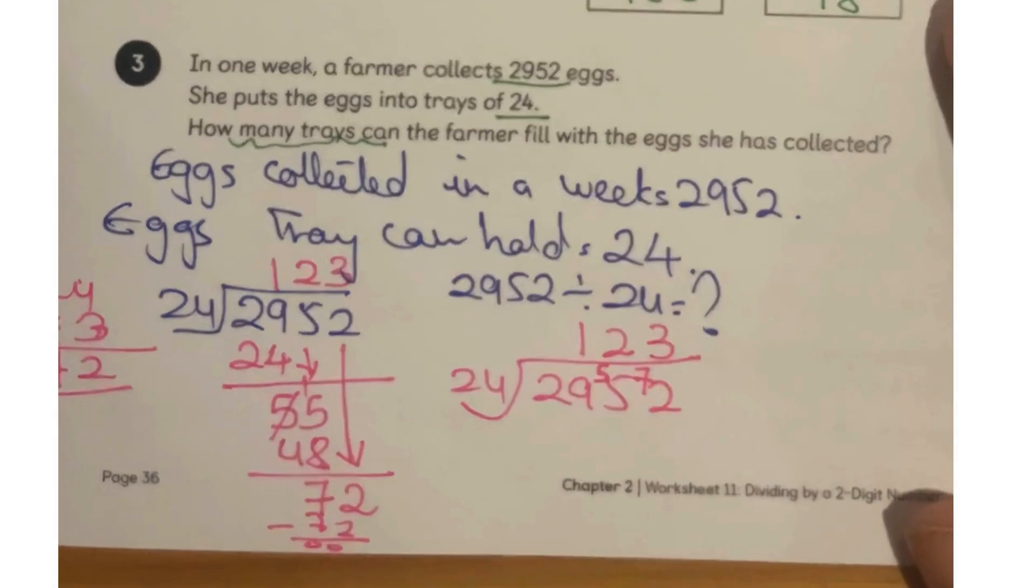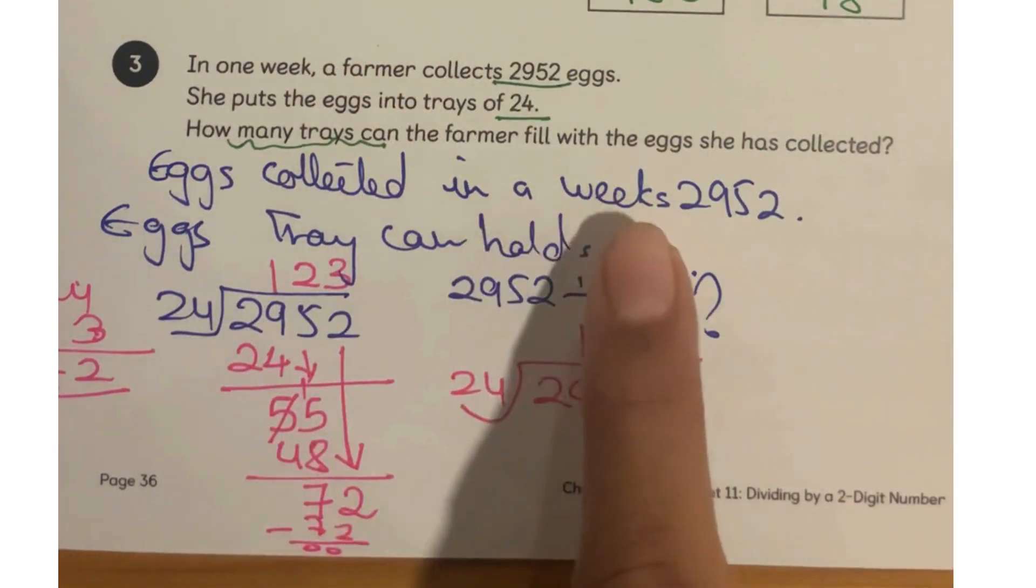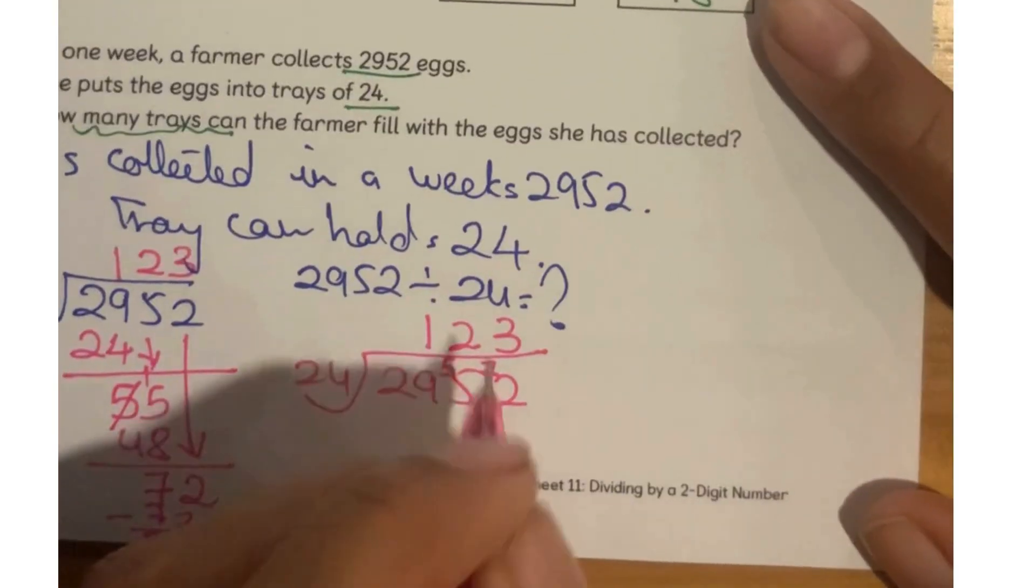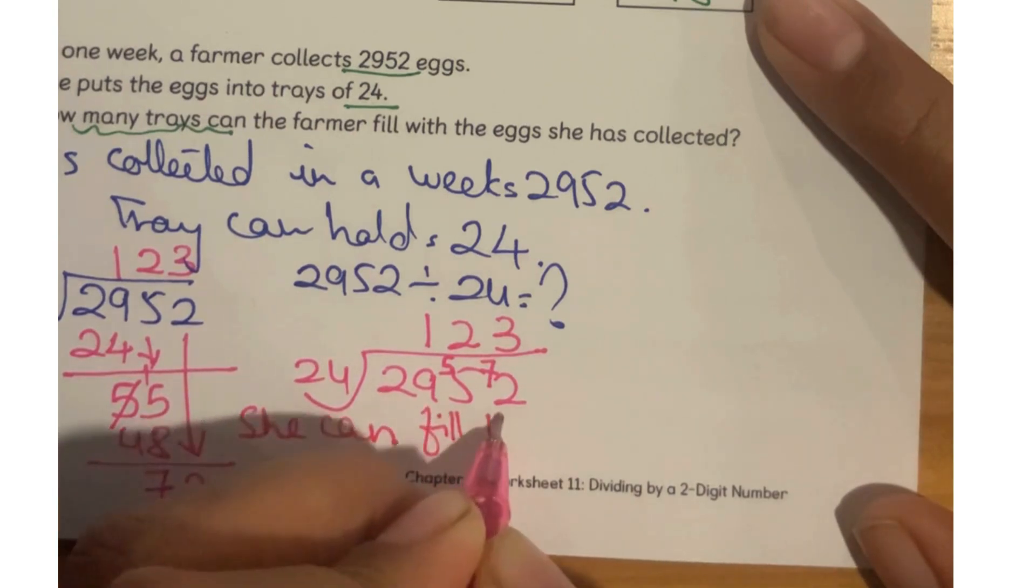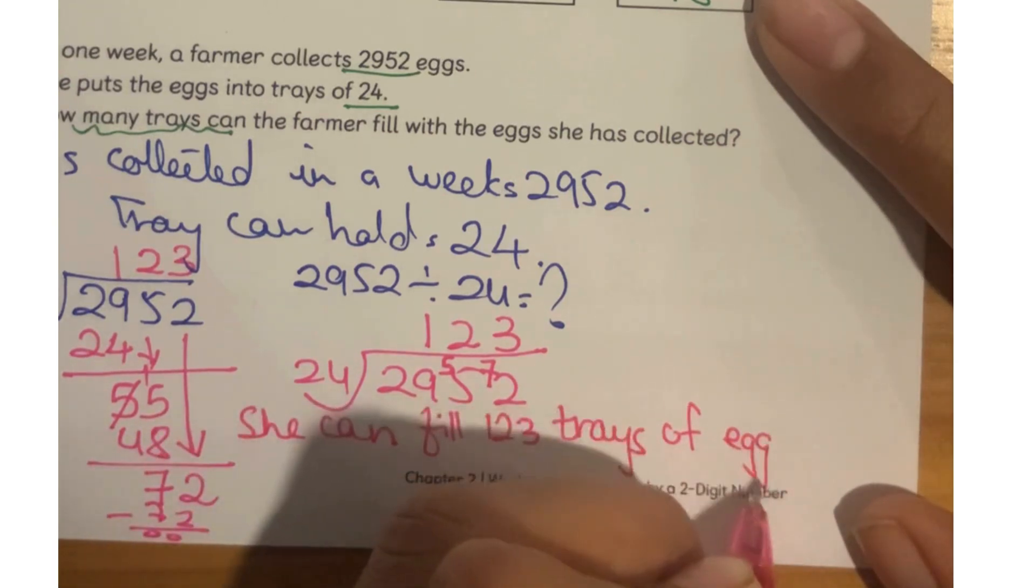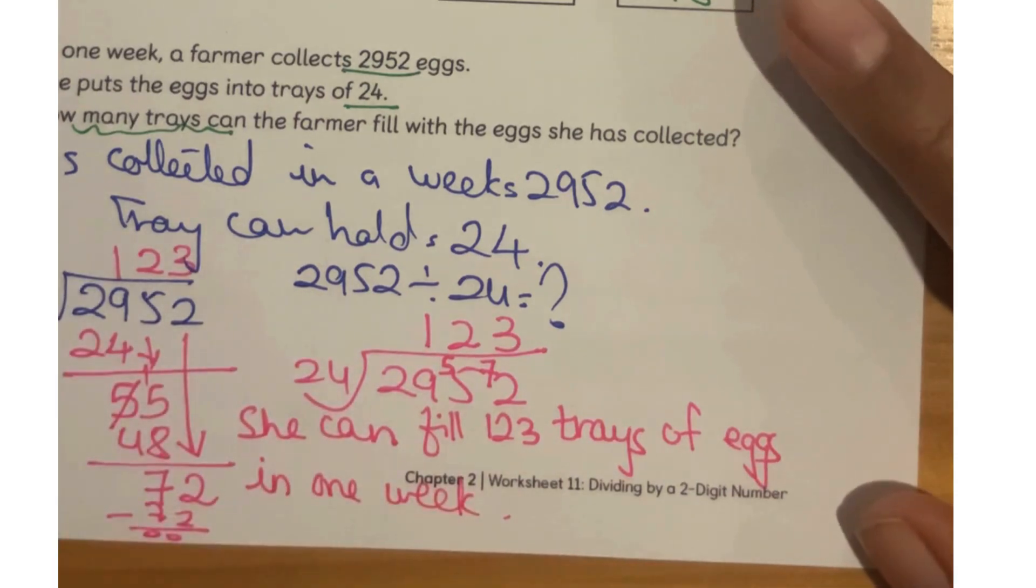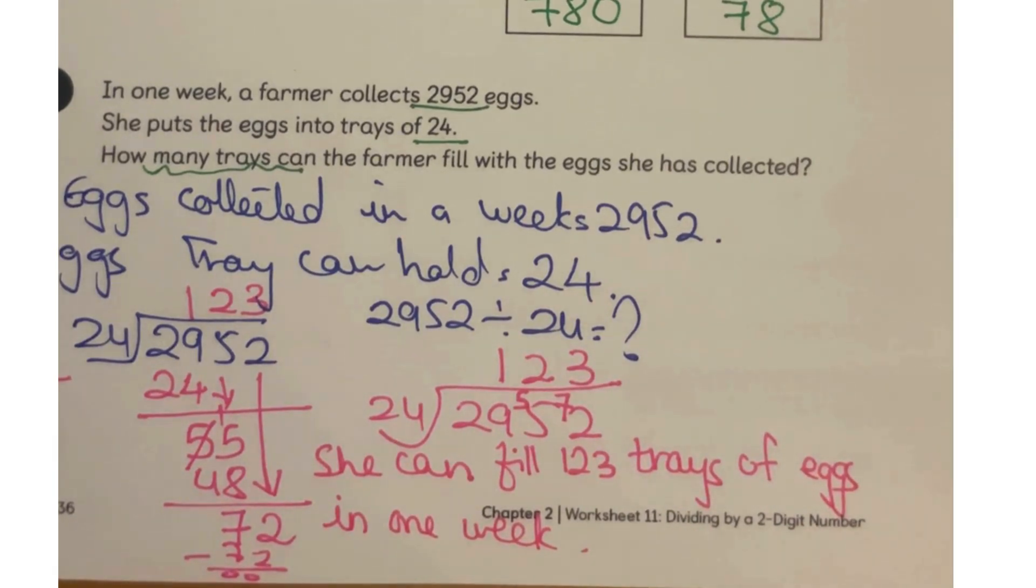So Hannah's method is going to save time and allow you to toggle more of your cognitive skills and your brain development. Do challenge yourself. Final statement, how many trays can the farmer fill with the eggs she has collected? Final statement will be, she can fill 123 trays of eggs in one week. Thank you for staying tuned. Do like, share and subscribe. Take care. Bye-bye.